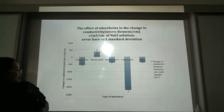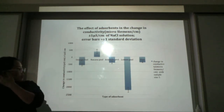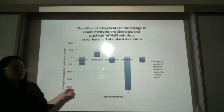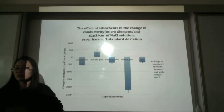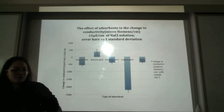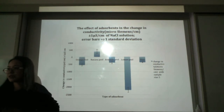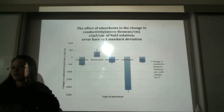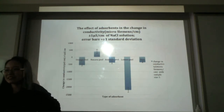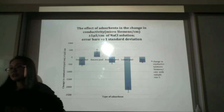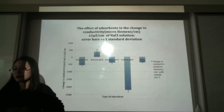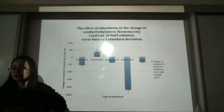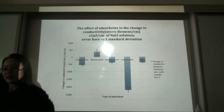I placed the bio-adsorbents in the NaCl solution and measured how much salt they absorbed. Lemon peel had a huge effect — the conductivity changed significantly. This shows that waste materials we don't typically think of as important could become a key component in the water desalination process. Whether it's bio-adsorbents or zeolite nanosheets, both represent promising fields of research for more effective desalination.